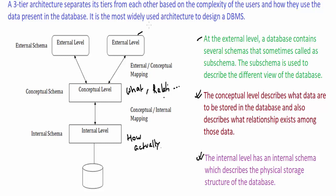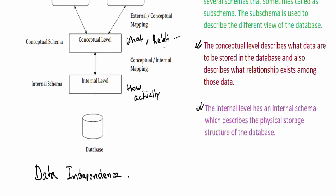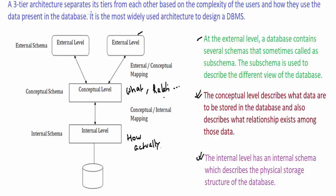There is also a very important term in DBMS architecture: data independence. Data independence can be defined as the capacity to change the schema at one level without changing the schema at the next higher level. For example, changing something at the internal level must not require a change at the conceptual level.